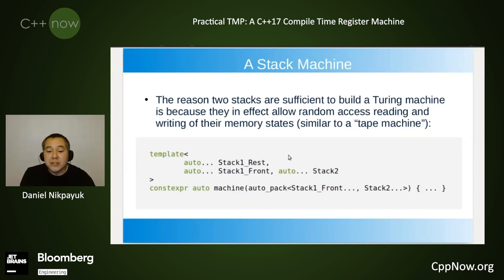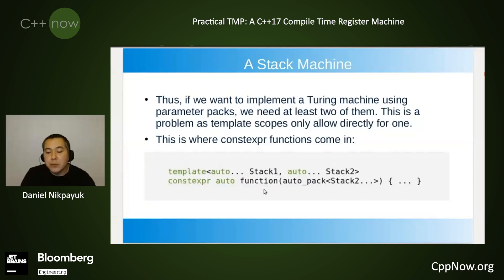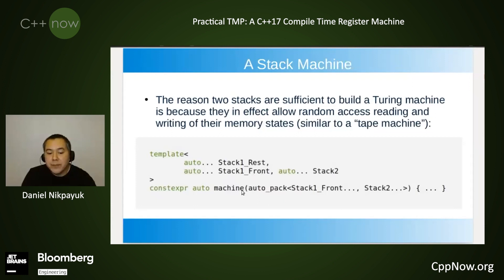The reason two stacks are sufficient to build a Turing machine is because they in effect allow random access reading and writing of their memory states, similar to a tape machine. For example, if we wanted to access an element in the middle of stack one, we take the front of stack one and put it in front of stack two — giving us access to the rest of stack one and the element at its front — and then we can manipulate and mutate from there. When we're done, we can put the front of stack one back, having effectively done a random access mutation.